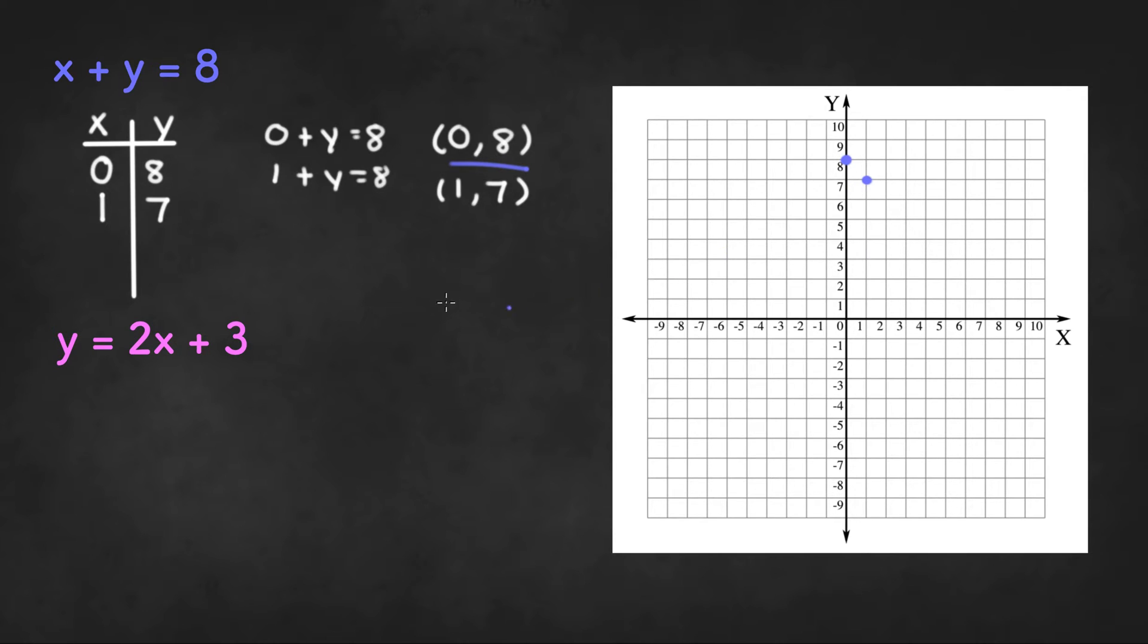We can graph a line with these two points but to eliminate any chance of error we can try to find another solution to the equation to check our work.